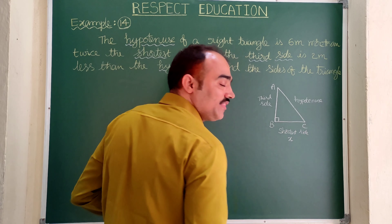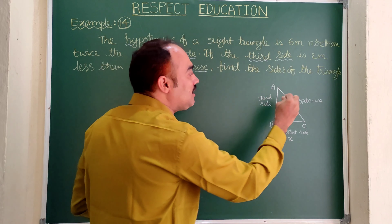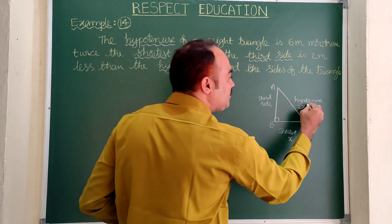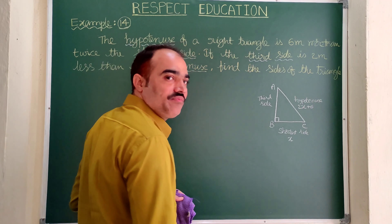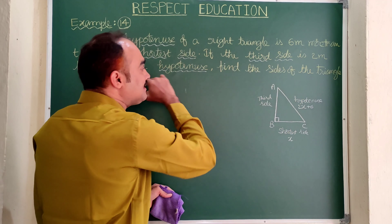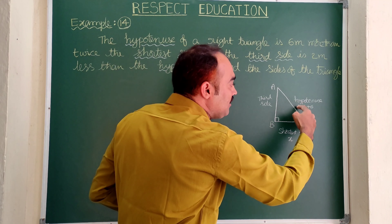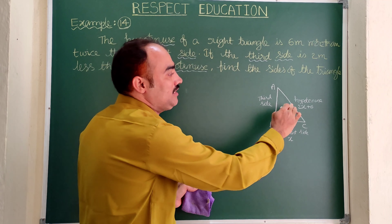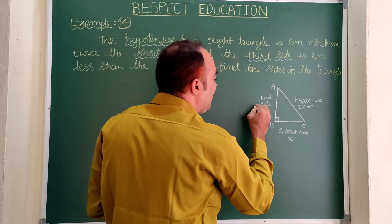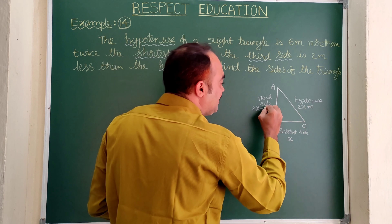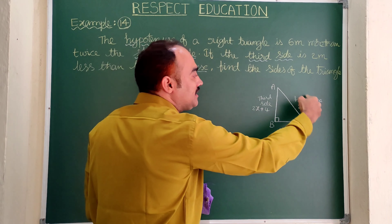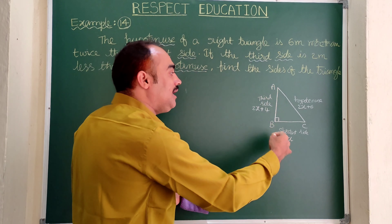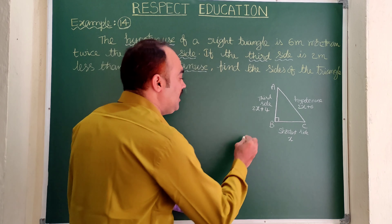Now we read the question again. The hypotenuse is six meters more than twice the shortest side. If we take the shortest side as X, twice X becomes 2x, and six meters more means plus six, so hypotenuse equals 2x plus 6. The third side is two meters less than the hypotenuse, so we subtract 2: 2x plus 6 minus 2 equals 2x plus 4.